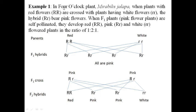Example one: in the four o'clock plant, Mirabilis jalapa, when plants with red flowers (capital R, capital R) are crossed with plants having white flowers (small r, small r), the F1 hybrids are capital R, small r and bear pink flowers. So the red flower parent crossed with the white flower parent gives F1 hybrids that are all pink in color — a mixture of both parents — rather than resembling the dominant red parent.